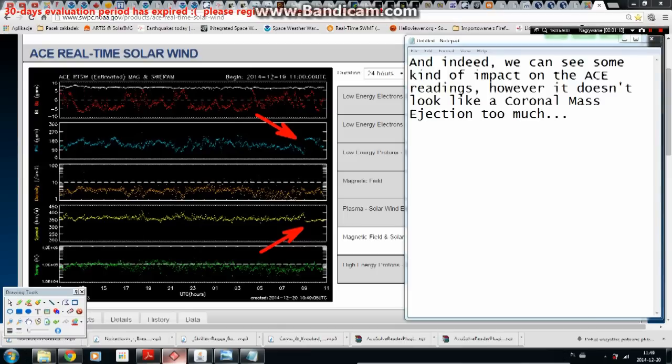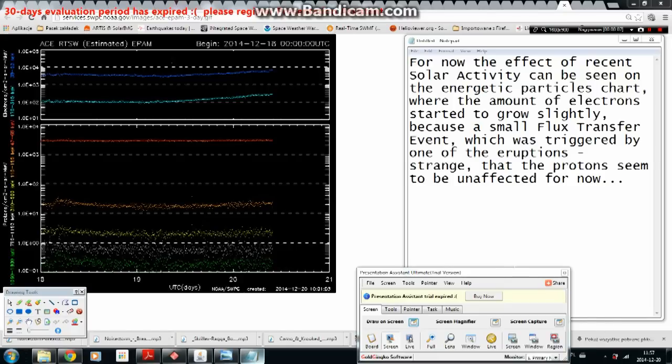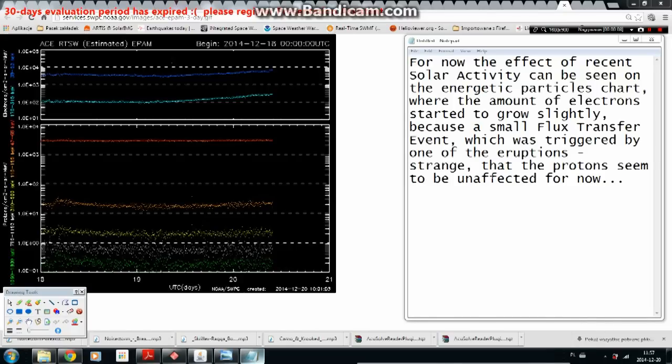And indeed, we can see some kind of impact on the ACE readings, however it doesn't look like a coronal mass ejection too much. For now the effect of recent solar activity can be seen on the energetic particles chart, where the amount of electrons started to grow slightly because of a small flux transfer event which was triggered by one of the eruptions. Strange that the protons seem to be unaffected for now.